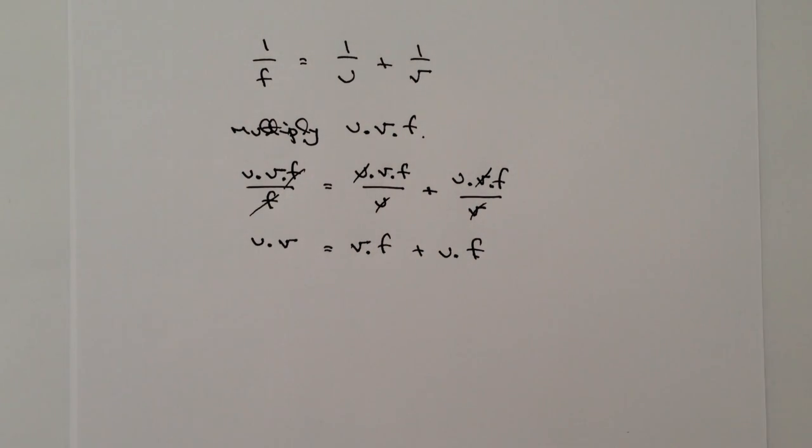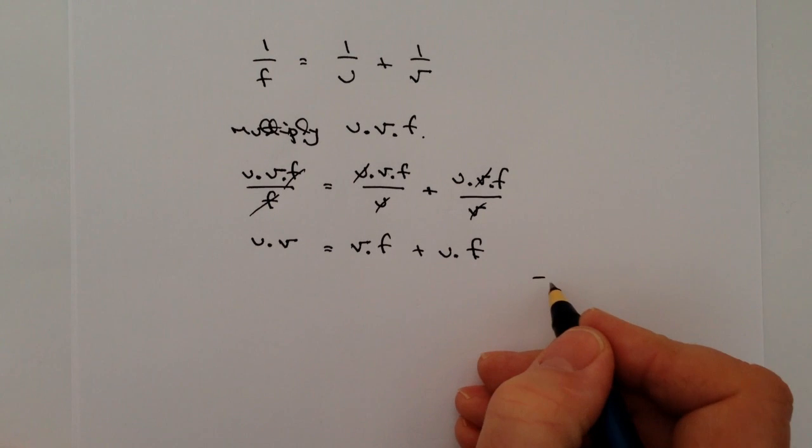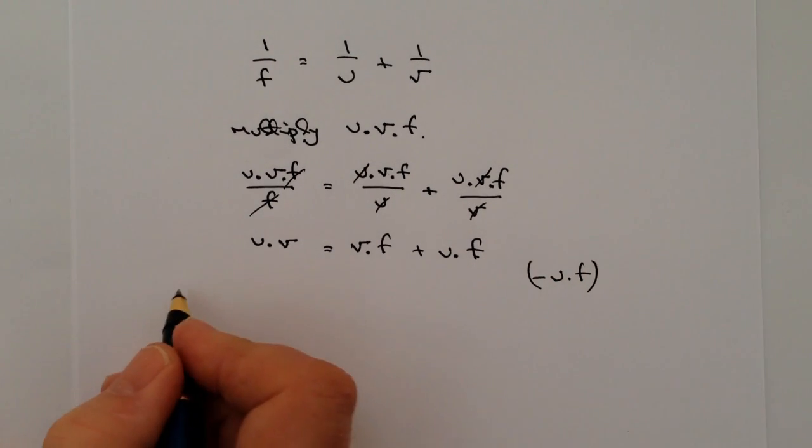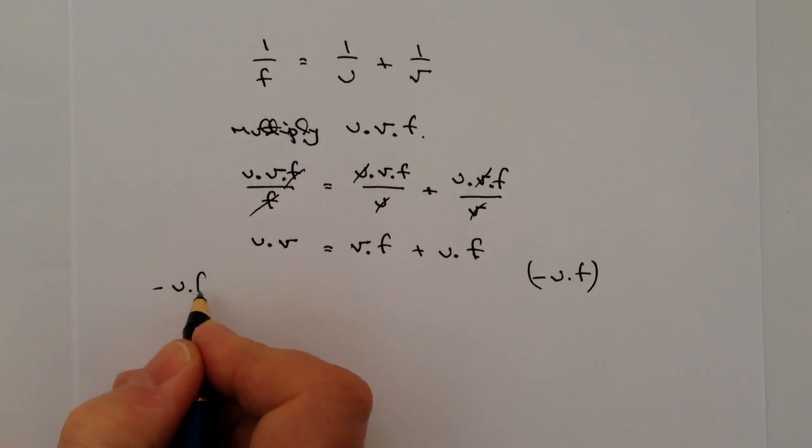So that means I've got a situation where I've got a value of u times v and a value of u times f. So I need to get those two together. That's fairly straightforward. If I minus uf from this side, and providing I do it to the other side as well, I've got minus uf.